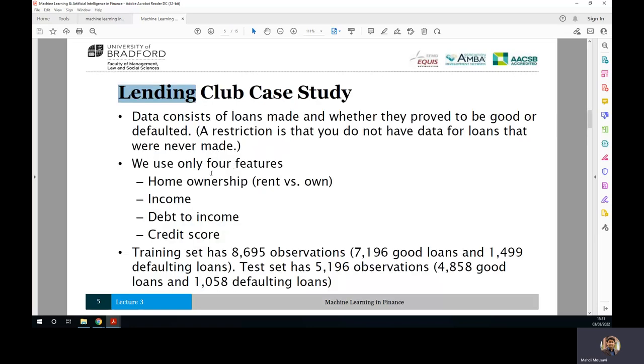Some of those who received the loan actually failed to pay back the loan to this company. Anyway, so we use only four features in this case: home ownership, income, debt to income ratio, and credit score. Usually most of the lending companies need these four or maximum five, six features to decide if you are a reliable customer and you are going to pay them back or not. One of them is the home ownership, if you are owning a home, is that a rent or is that an owned home. The second one is your level of income, and then we have got debt to income ratio and credit score.